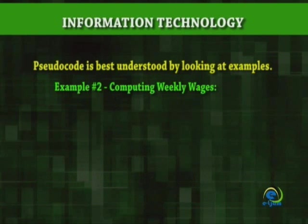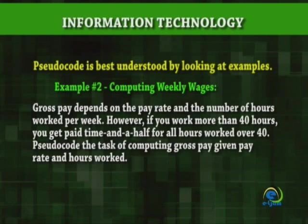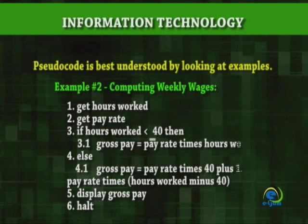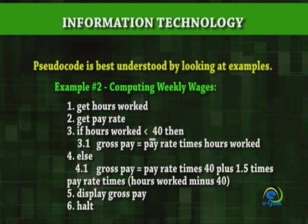Example number 2: Computing weekly wages. Gross pay depends on the pay rate and the number of hours worked per week. However, if you work more than 40 hours, you get paid time and a half for all hours worked over 40. Pseudocode: 1. Get hours worked. 2. Get pay rate. 3. If hours worked less than or equal to 40, then 3.1 gross pay equal pay rate times hours worked. Else 4.1 gross pay equal pay rate times 40 plus 1.5 times pay rate times hours worked minus 40. 5. Display gross pay. 6. Halt.